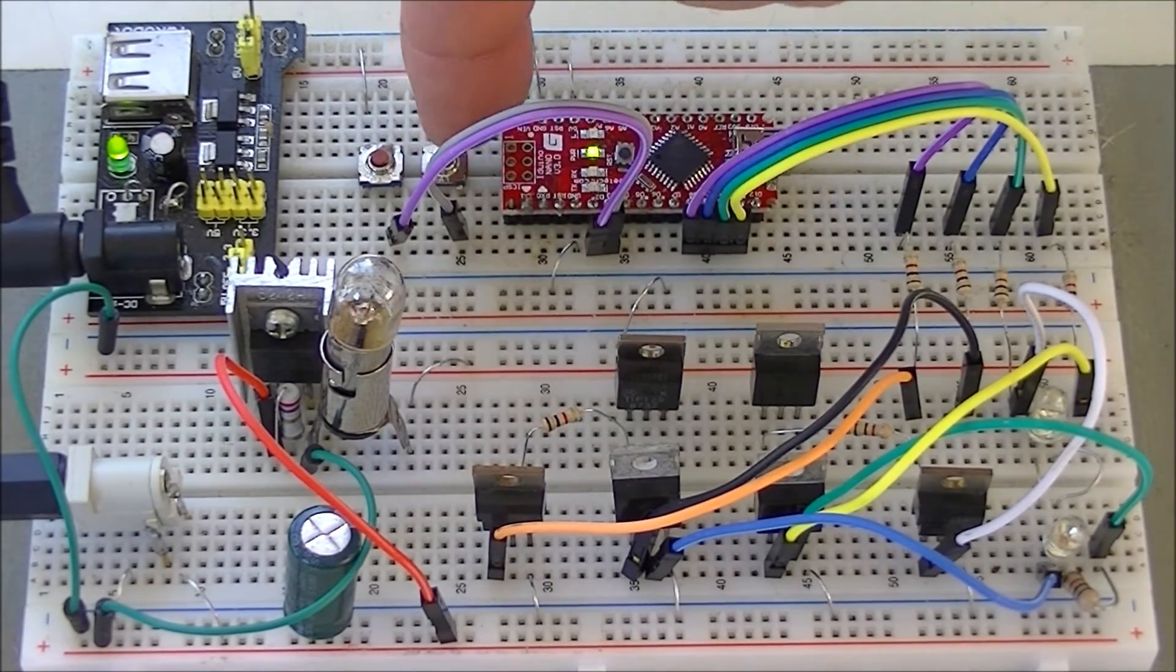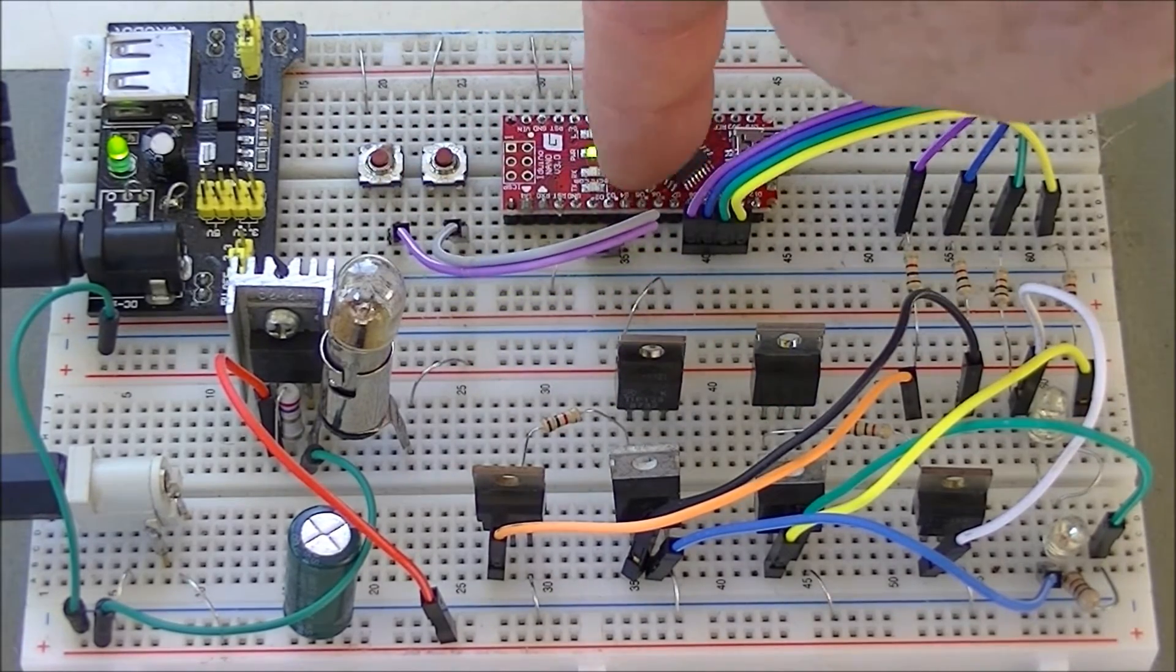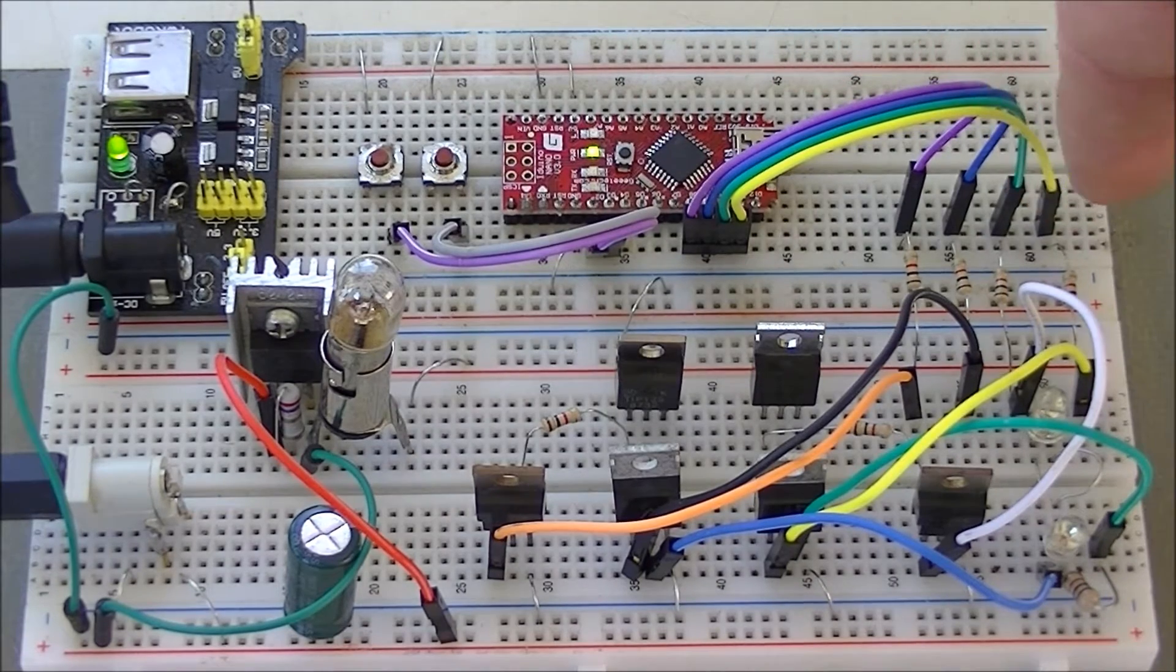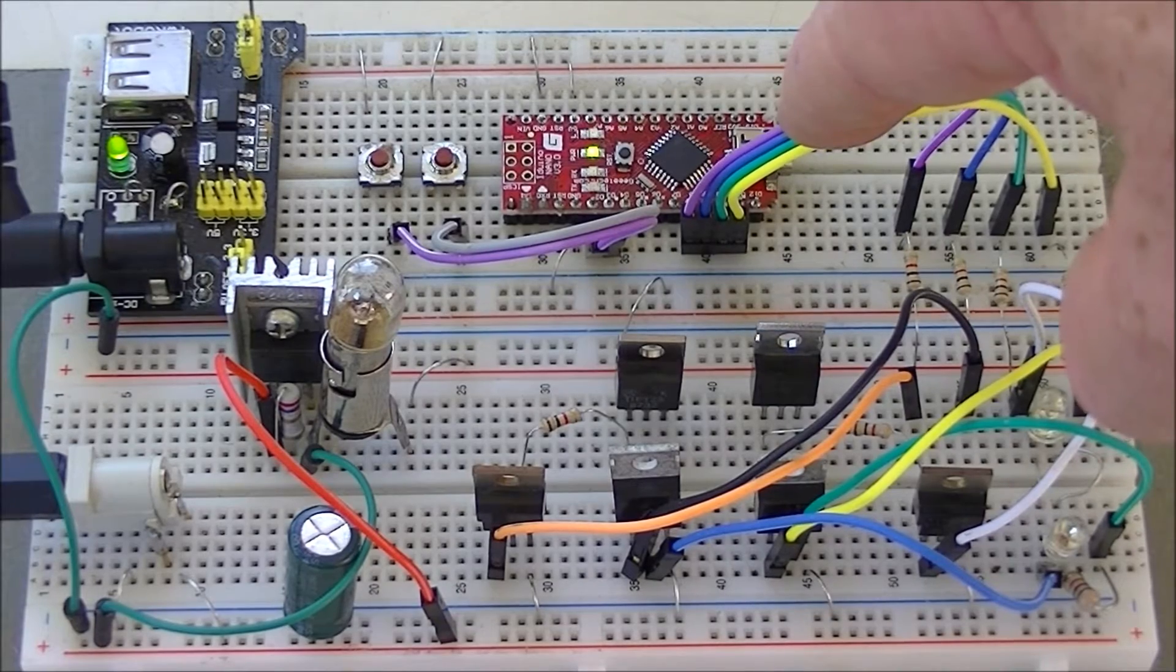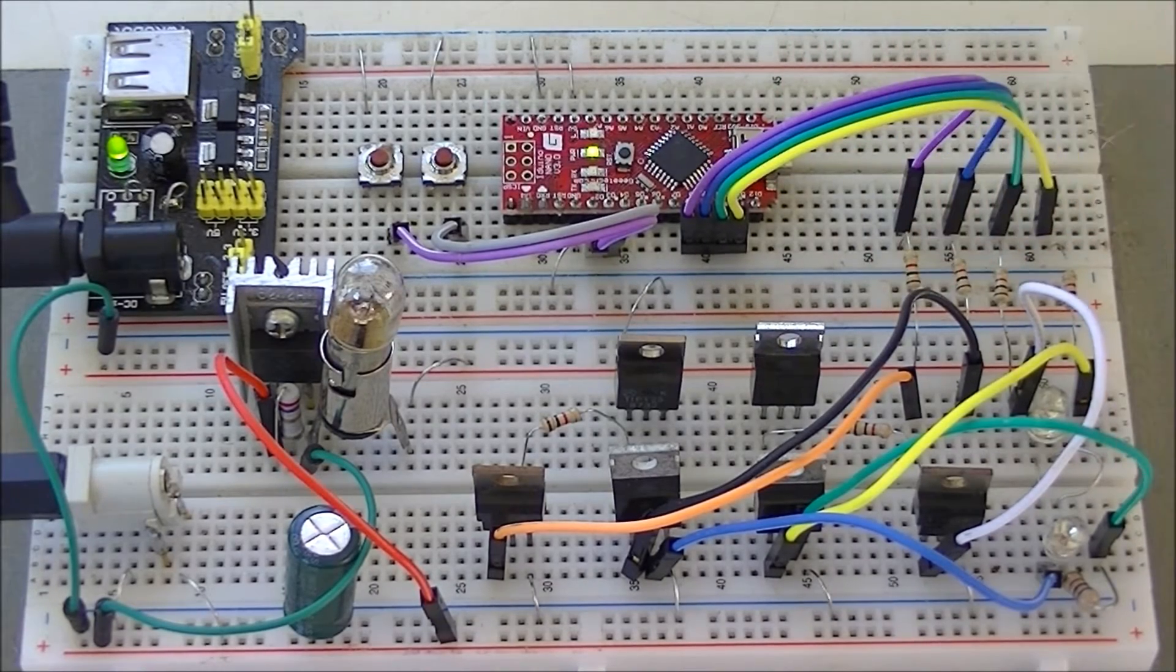You have these two switches for forward and reverse. That's an Arduino Nano. That's four of, that's PB8 through 12 through these four resistors.